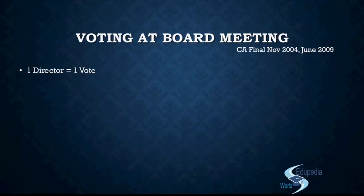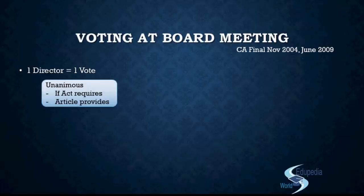Now, how many votes win a resolution? There can be a situation when the act or the article may demand a unanimous resolution. A unanimous resolution is only required by the act at specific situations, or if the article says so. The article may say that all the resolutions in the board of my company will be passed by a unanimous resolution. If the article says so, then all resolutions will have to be passed by unanimous resolution. Otherwise, if these two situations do not prevail, then the majority votes win. If majority is for the resolution, the resolution is accepted; if the majority is against, the resolution is lost.